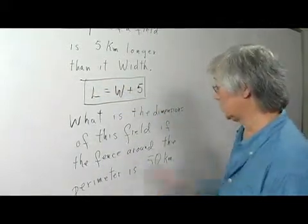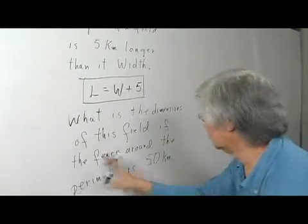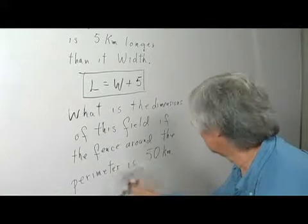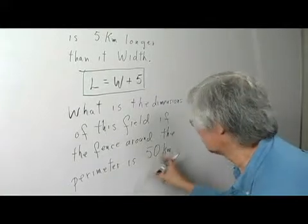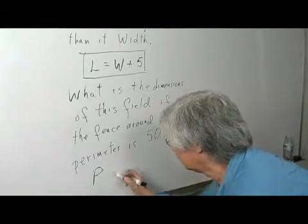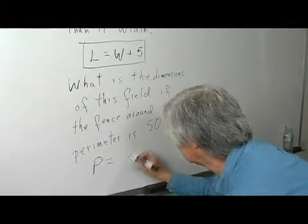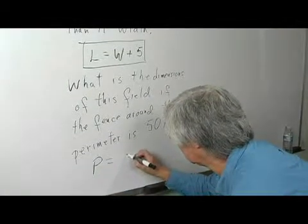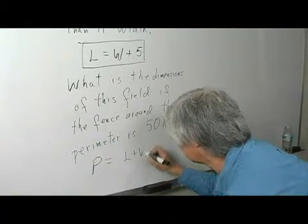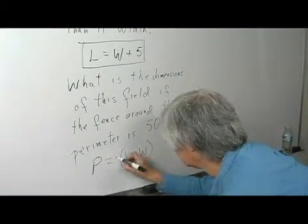Let me rewrite this second statement. We'll talk about the perimeter of this field. P, standing for perimeter, is equal to the length plus the width, twice that.